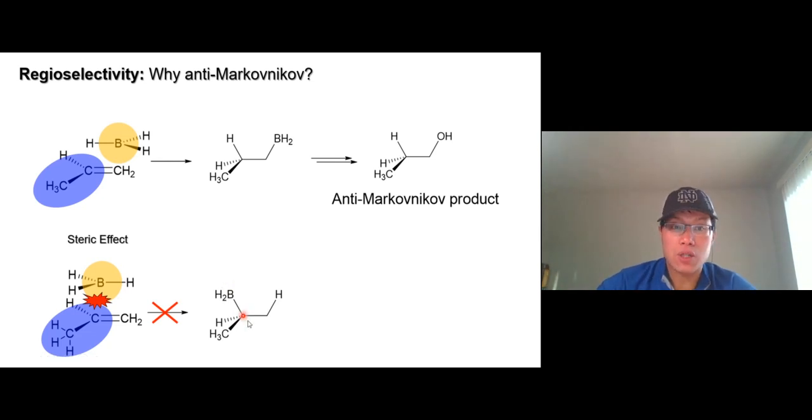So boron will never go on the more substituted carbon because of the steric hindrance to give the Markovnikov product. So it won't go this way.